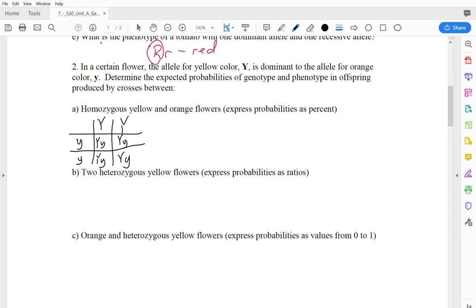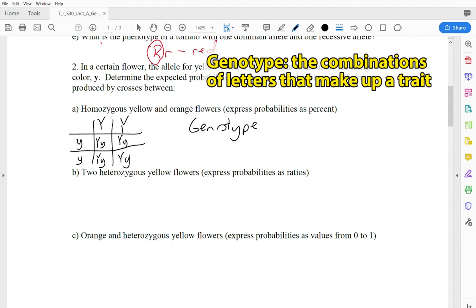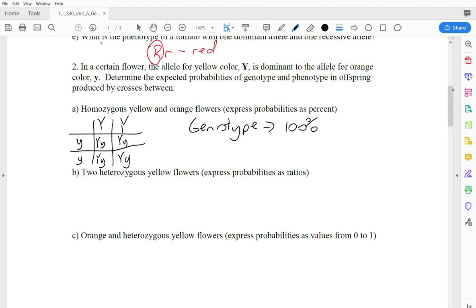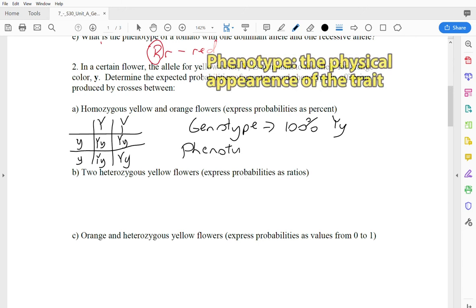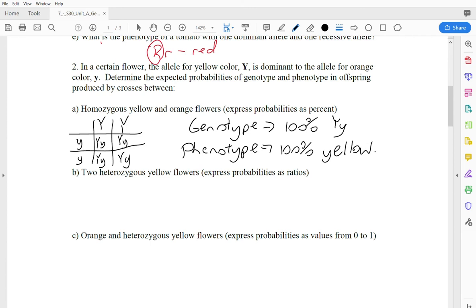And this one is actually not super interesting because, as you can see, every single one turns out exactly the same. So that means that our genotype, which means the breakdown of all your different letter combinations, it's 100% capital Y lowercase y. And the phenotype is 100% yellow. That's what that uppercase Y, lowercase Y means, since the uppercase Y is telling us it's going to be dominant for the yellow color.